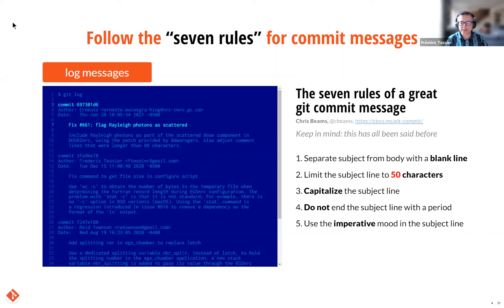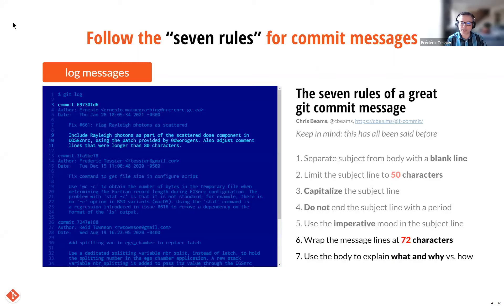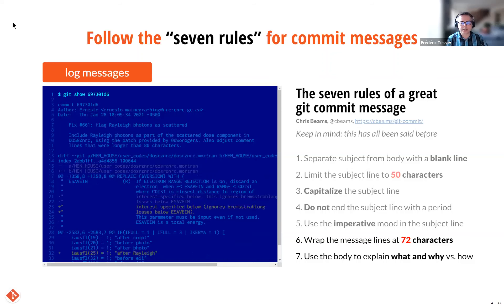With the standard git log command without the one-line option, we get the full log output. For every commit, we see the hash, the author, the date, and the longer commit message body, providing additional context beyond the short commit title. Since the inception of Git 15 years ago, conventions have emerged — I urge you to follow what are now known as the seven rules for commit messages. The first five rules pertain to the commit title: enter a blank line after the title, limit the subject line to 50 characters, capitalize, do not end with a period, and use the imperative mood. The last two rules pertain to the message body: wrap at 72 characters, and strive to explain the reason for the change.